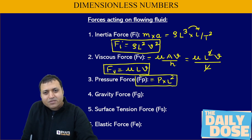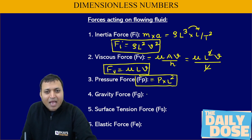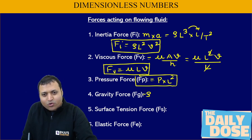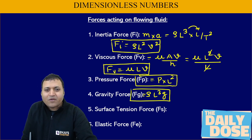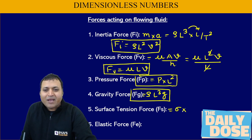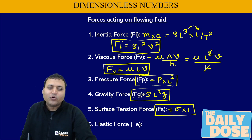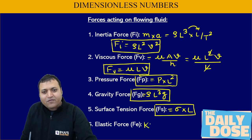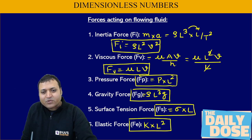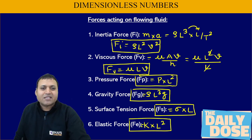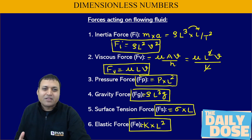Then, gravity force is mass into acceleration due to gravity — that is density times volume times g, giving rho L-cubed times g as the gravity force or weight. Surface tension force equals surface tension multiplied by the length of the common interface. And finally, elastic force, which is bulk modulus of elasticity into area, so elastic force equals K times L-squared. These are the various forces acting on the flowing fluid.